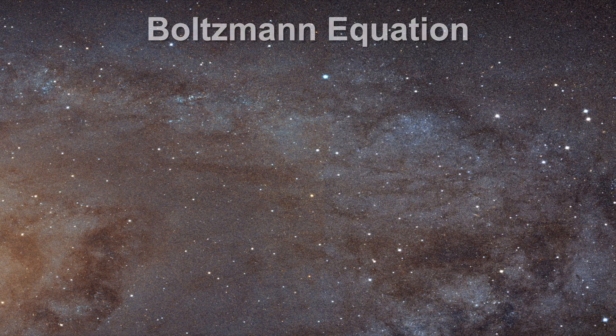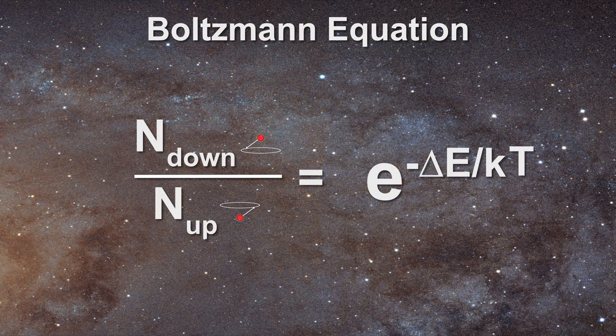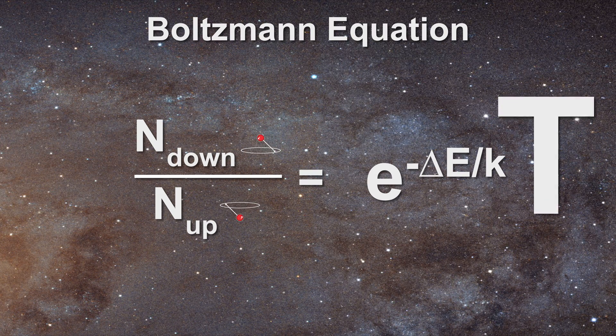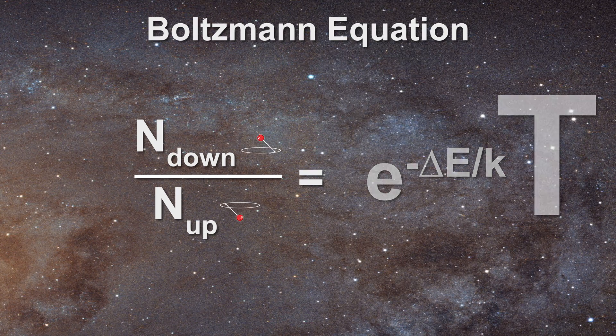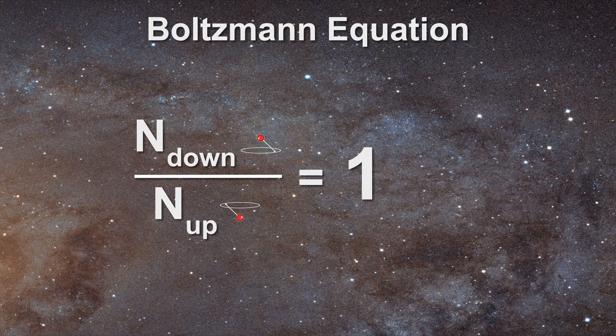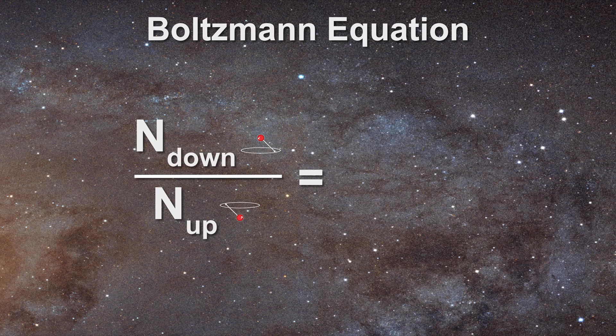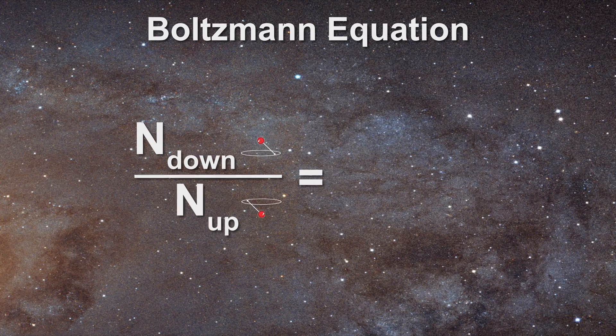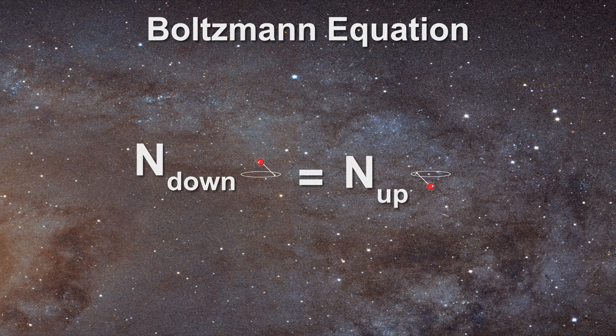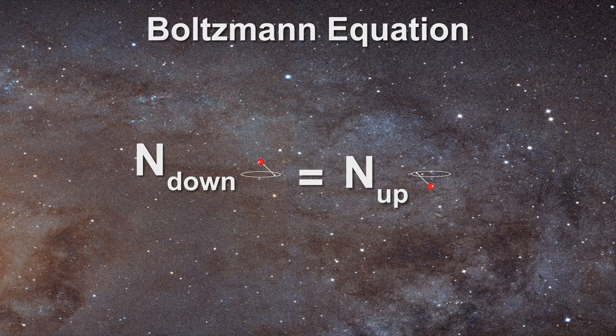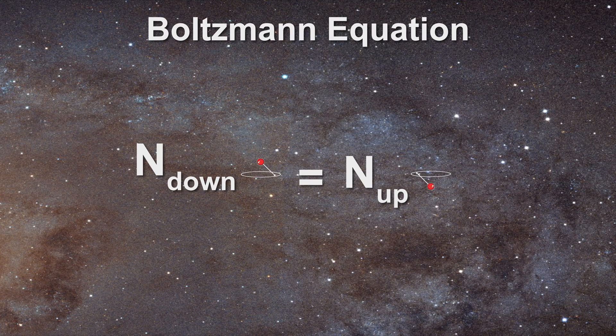Now let's return to the Boltzmann equation. As temperature moves to infinity, the population of the nuclear spins in each state becomes equal, as e to the zero is equal to one. This is telling us something about the definition of temperature as well. Infinite temperatures imply that all states are equally populated. That would not be very useful for MRI since no signal could be extracted from such a system.